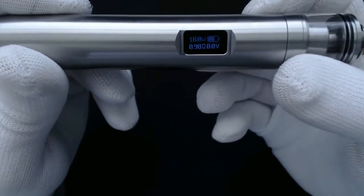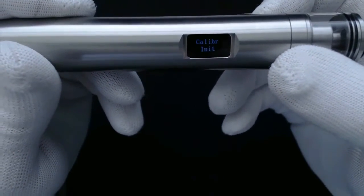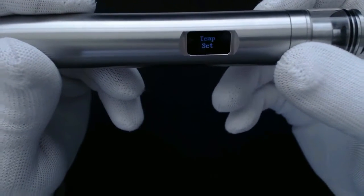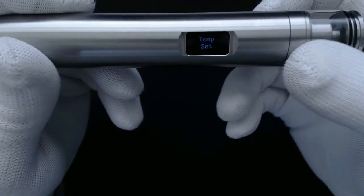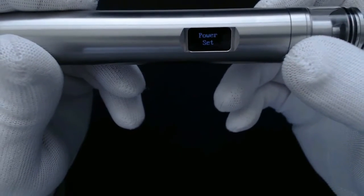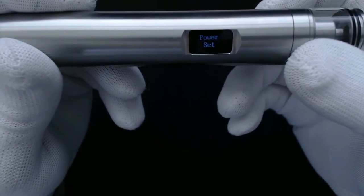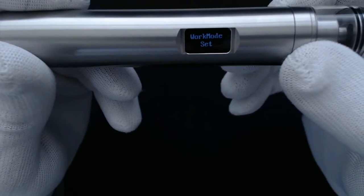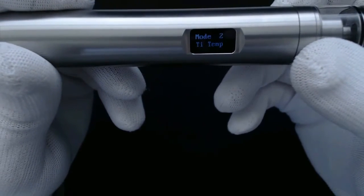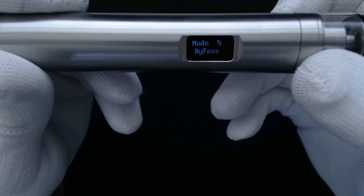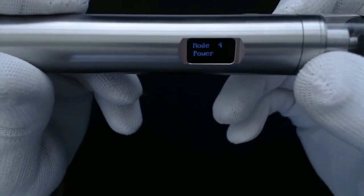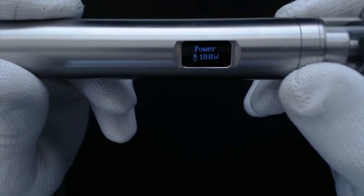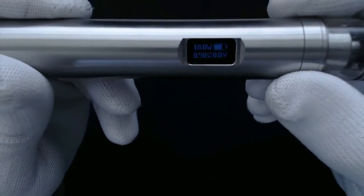That's now in wattage mode at 18 watts. If you want to change various other things we go three clicks into the menu and we scroll through the menu. So we've got power set, temp set, work mode set, calibration, exit menu, display mode. If we want to go to work mode we now have, we leave it and we have mode 1 nickel temp, mode 2 titanium temp, mode 3 stainless steel temp, mode 4 power, mode 5 bypass.